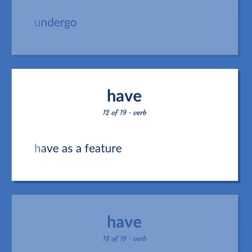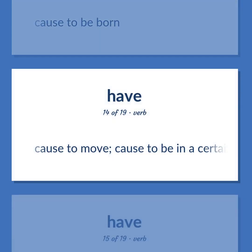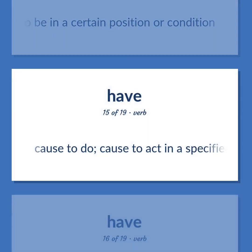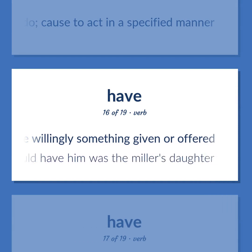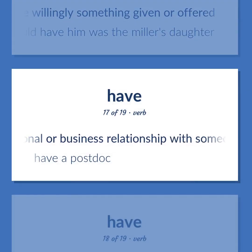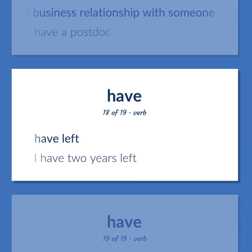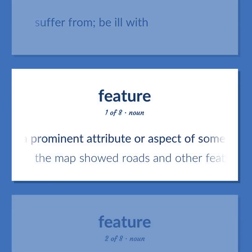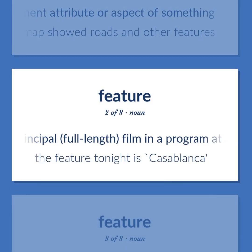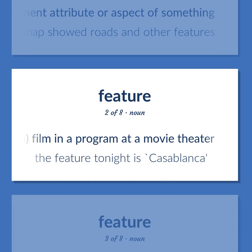Undergo. Have as a feature. Cause to be born. Cause to move; cause to be in a certain position or condition. Cause to do; cause to act in a specified manner. Receive willingly something given or offered — the only girl who would have him was the miller's daughter. Have a personal or business relationship with someone — have a postdoc. Have left — I have two years left. Suffer from; be ill with. Feature: a prominent attribute or aspect of something — the map showed roads and other features. The principal full-length film in a program at a movie theater — the feature tonight is Casablanca.